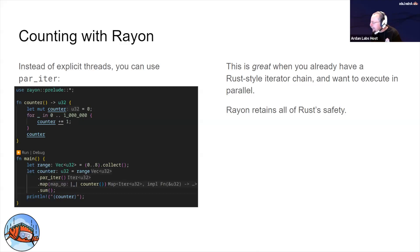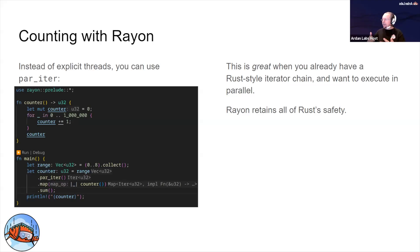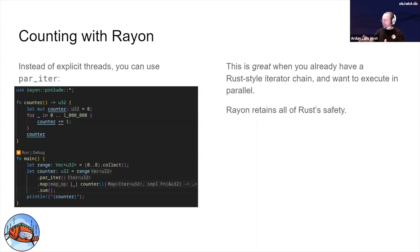Rayon retains all of Rust's safety. You can't share a raw mutable variable in Rayon, but if you need read-only access you don't need a mutex — it can access something using the same scope capture rules. If you wrap it in a Mutex, you can work with it just like any other shared protected variable.